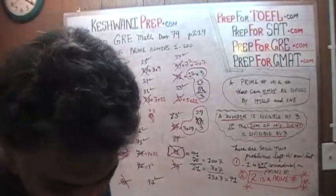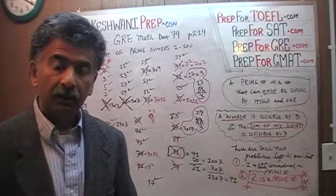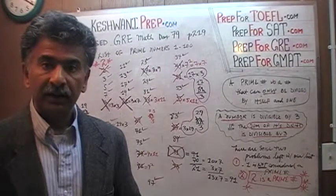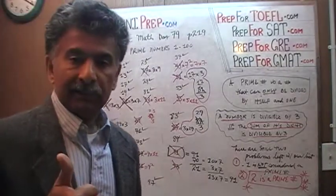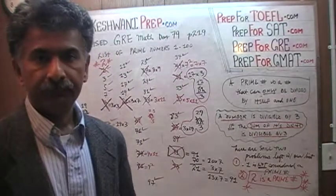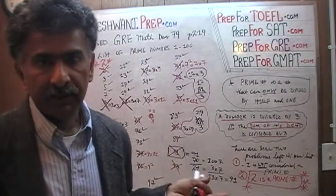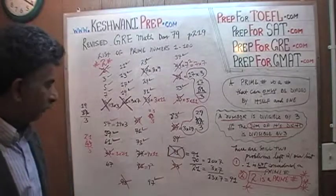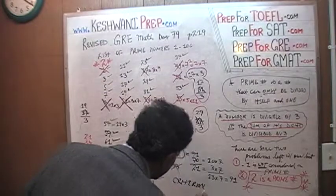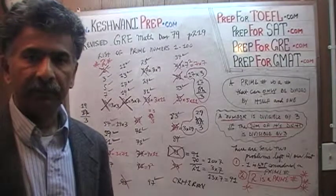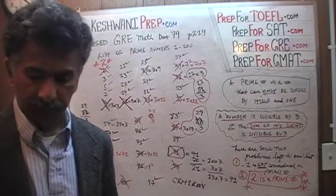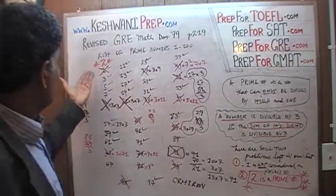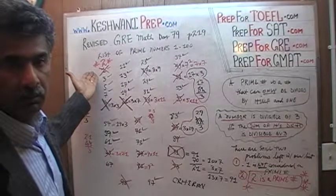Why is two a prime number? Because the definition of a prime number is that it can be divided only by itself and one. What can you possibly divide two by? Two cannot be divided by any number except itself and one, and therefore it meets the criterion of being a prime number. A number has to be divisible only by itself and one and nothing else. Two is the only even number which is a prime number. If somebody were to ask you: is it possible for an even number to be a prime number? Your gut feeling might say no — if it's even, you can divide by two. But the answer is yes: two is an even number which happens to be a prime number.